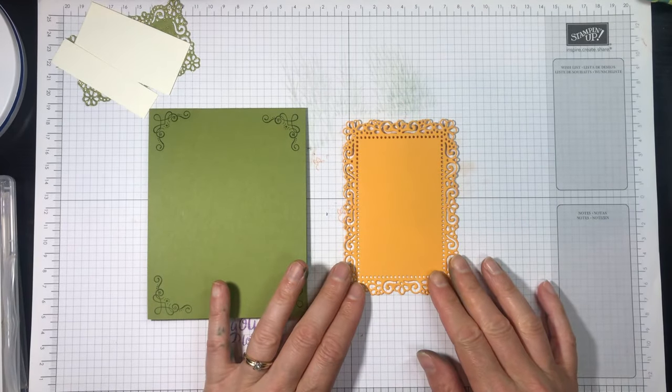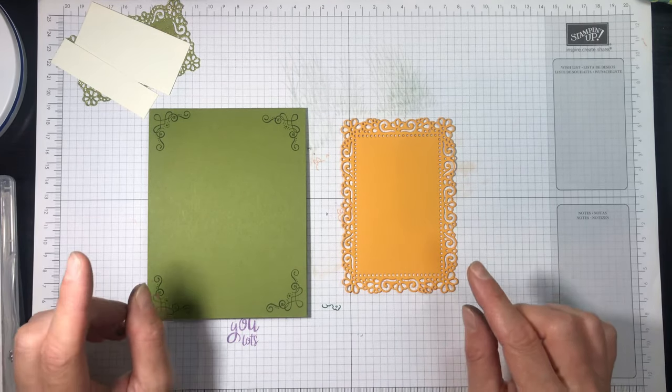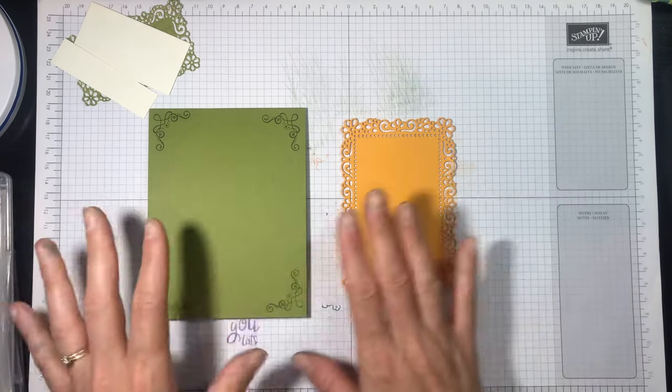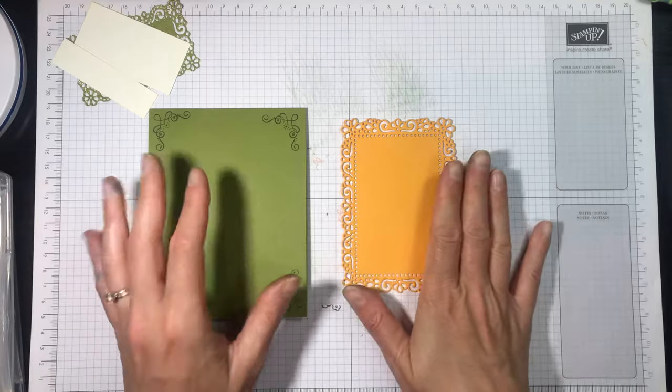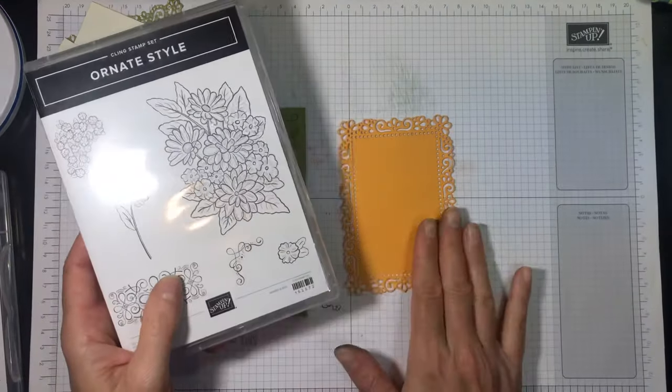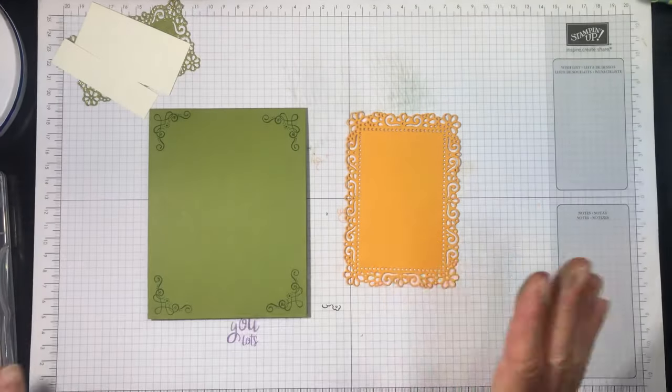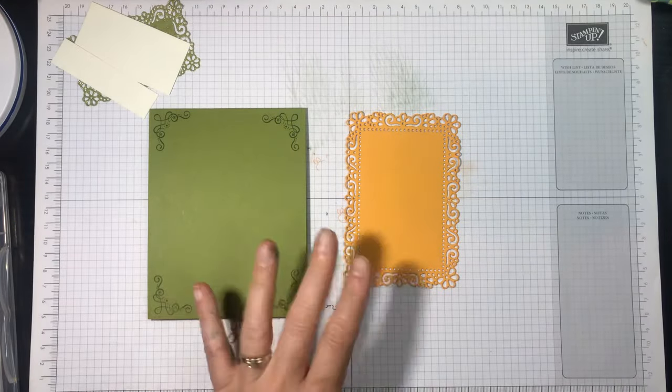Now this is a Mango Melody sheet of cardstock and I've used the Ornate Layers dies that coordinate with this stamp set in this product suite and I've die cut this out. You can bundle the Ornate Layers dies with this Ornate Style stamp set here and you can save 10% when you do that or you can buy them each separately.